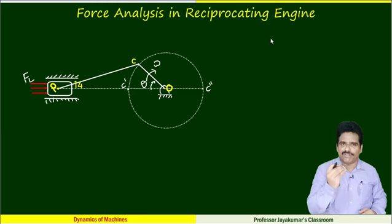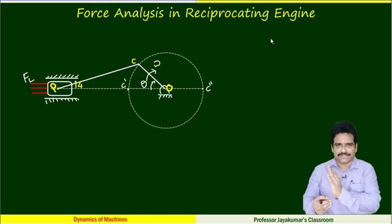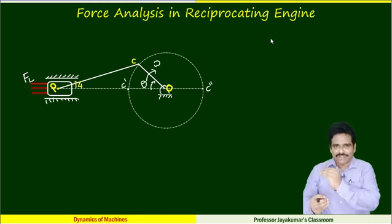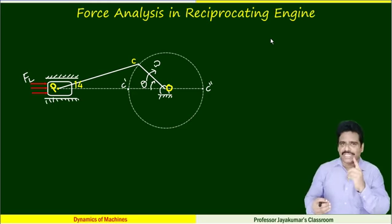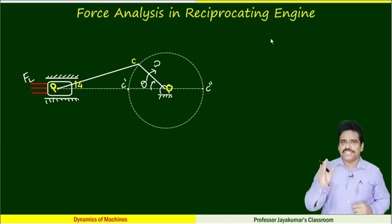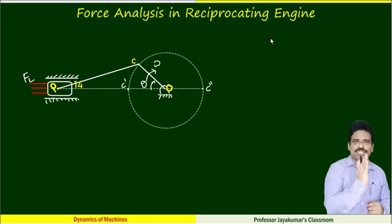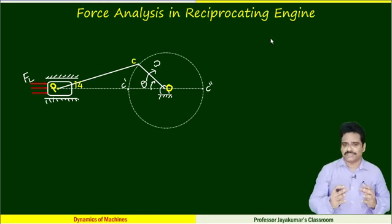During the first half of the stroke, the piston will be accelerating from 0 to 180 degrees. From 180 degrees to 360 degrees, during the second half of the stroke, the piston will be moving from outer dead center to inner dead center — we call that retardation.